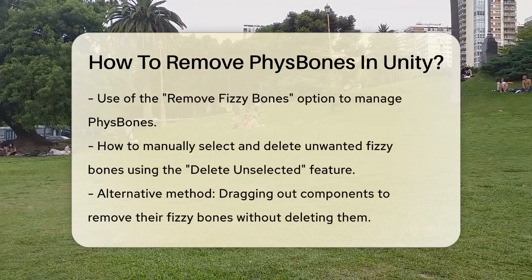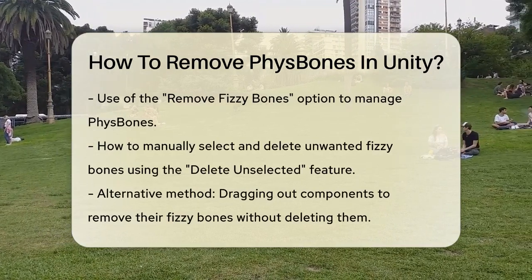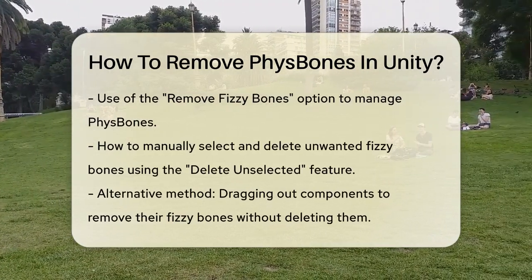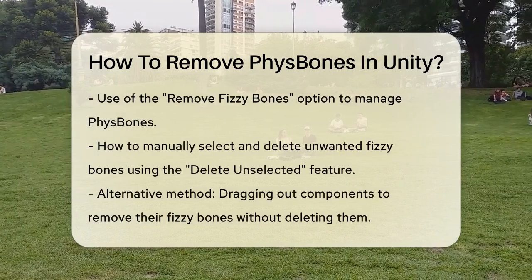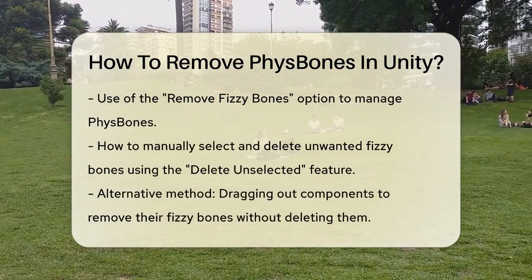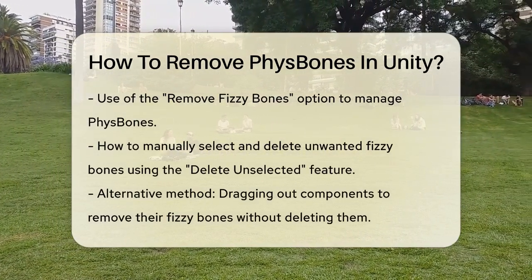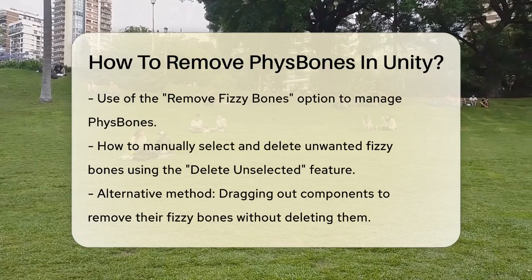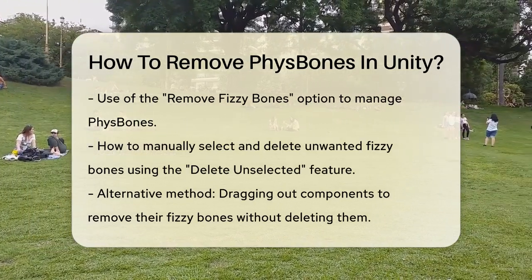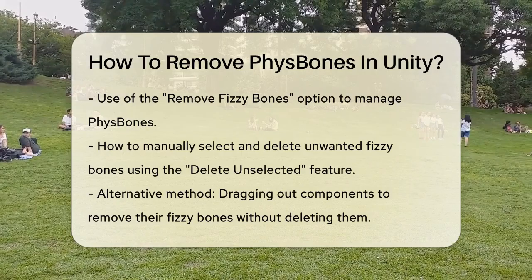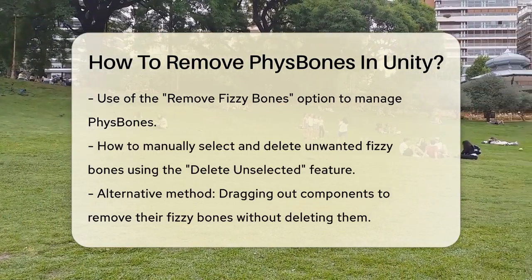One way to manage this is by using the Remove Fizzy Bones option. When you select your avatar, you can click on Remove Fizzy Bones and it will show you all the fizzy bones, colliders, and contacts for that avatar. Here, you can manually select the fizzy bones you want to delete. Just untick the ones you want to keep and then click Delete Unselected to get rid of the ones you don't need.